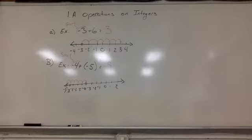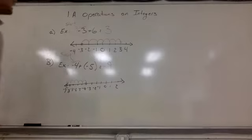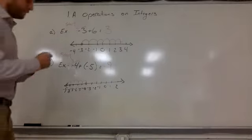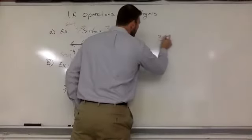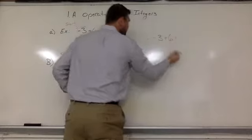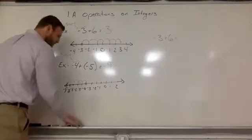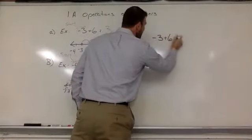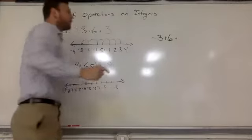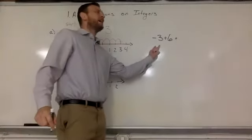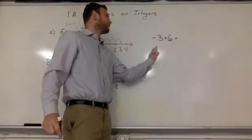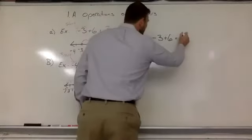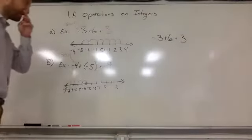So the way I like to think about it is this. I like money. Everybody likes money. So I like to think of it this way. When I'm talking about negative 3 plus 6, I think of it as money. So I borrowed $3 from Dan, and then I made $6. So if I'm borrowing $3, and then I made $6, how much money do I actually have? $3 after I pay Dan back.